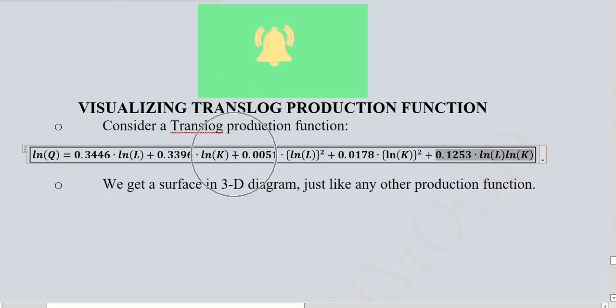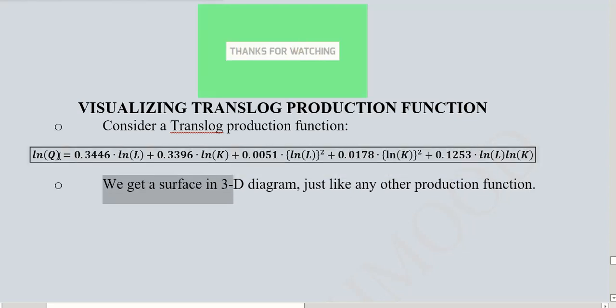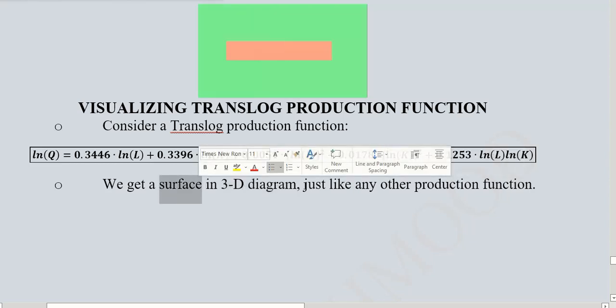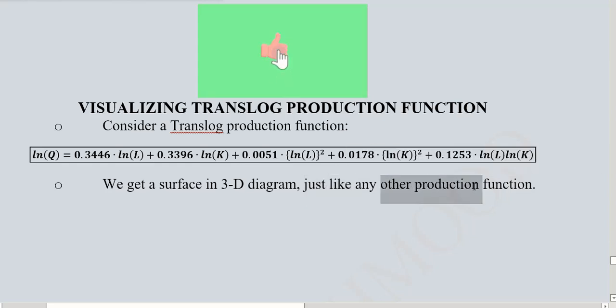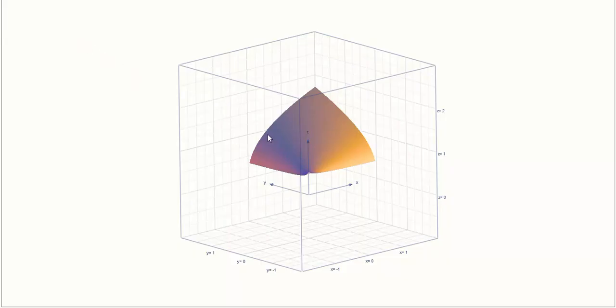And now we will plot it in a diagram, in a graph, in a 3D graph to see how it looks like. We are expecting that it is going to give rise to a surface because we have three variables: output, labor, and capital. So it will be a 3D diagram and it will give rise to a surface and not a line or any 2D shape. And it is going to look like other production functions. Let us see how it appears.